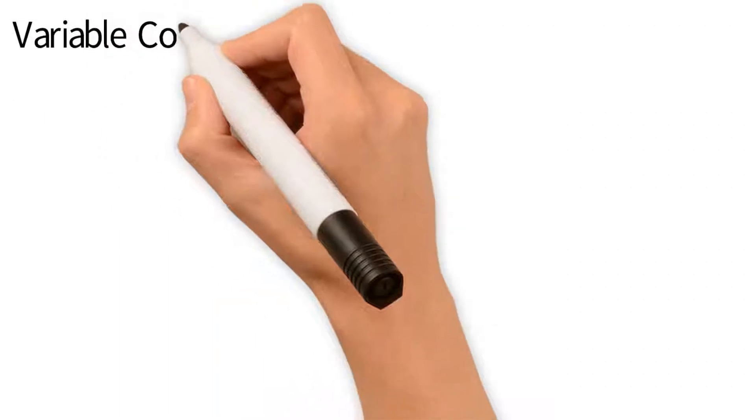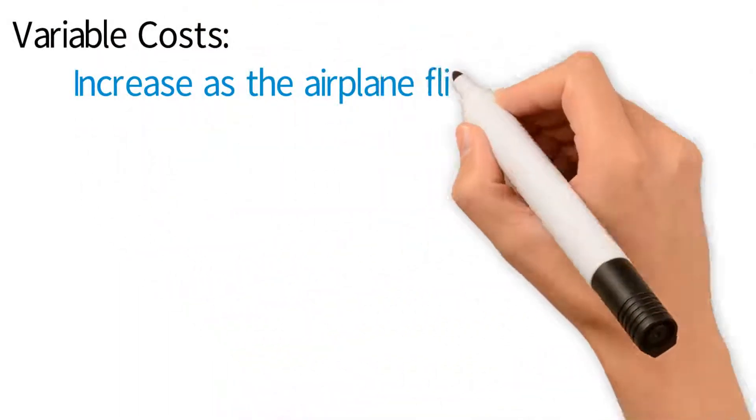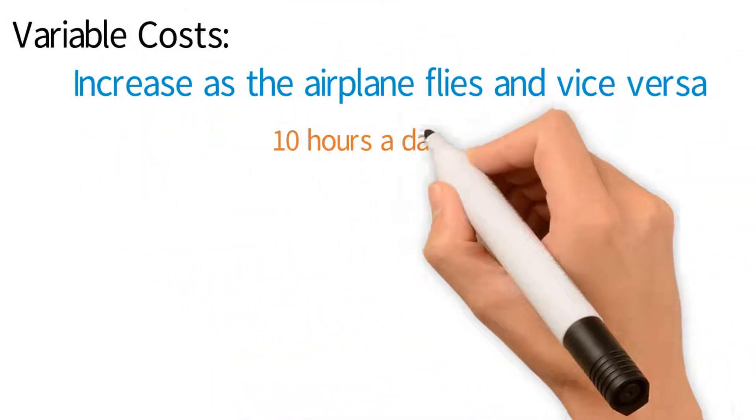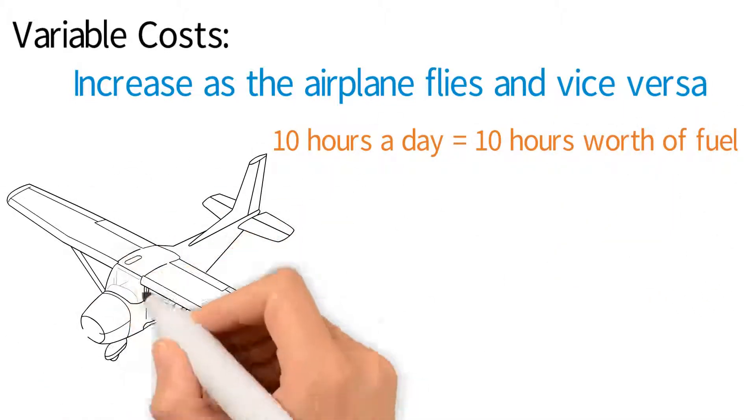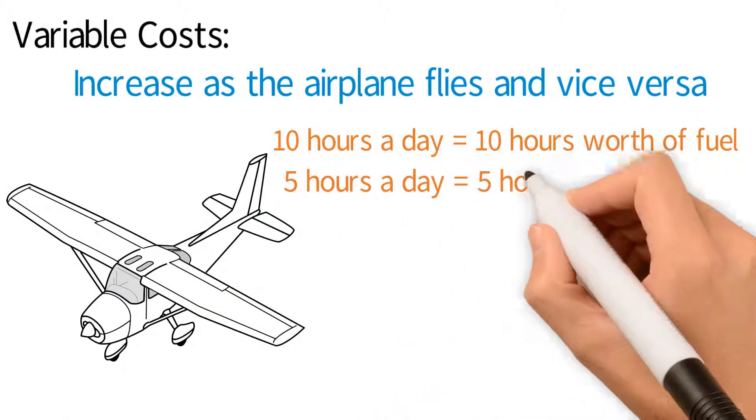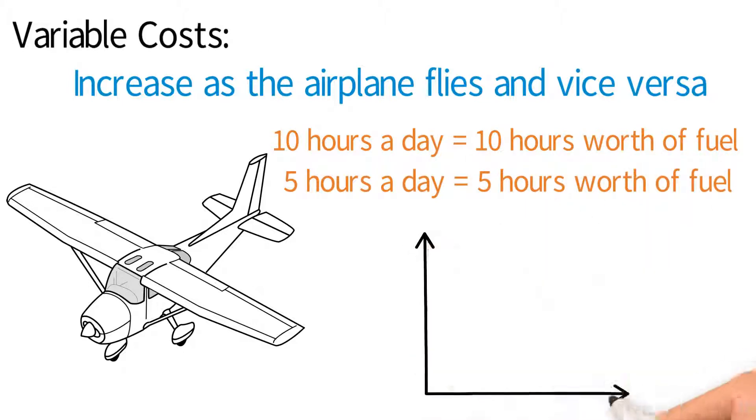Variable costs are costs that change with the hours the airplane flies. If it flies 10 hours a day, it will use 10 hours worth of fuel. If it only flies 5 hours in one day, it will use 5 hours worth of fuel. The cost increases as the hours increase and vice versa.